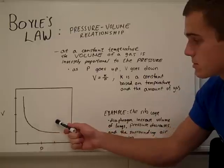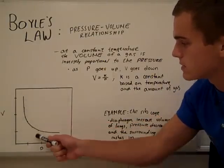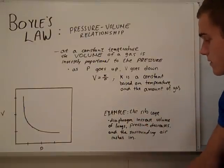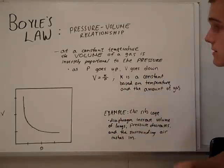This is the relationship drawn on a graph. As pressure increases, volume decreases. A perfect example of this is the ribcage. As the diaphragm increases the volume of the lungs, pressure decreases and the surrounding air rushes in. This gives us breathing.